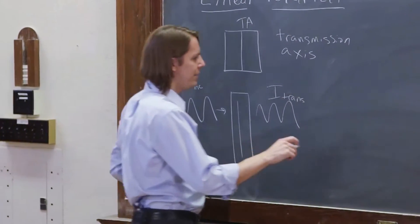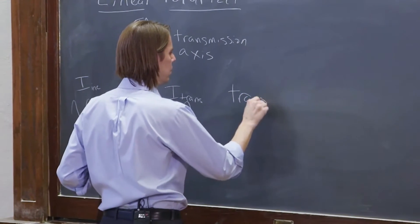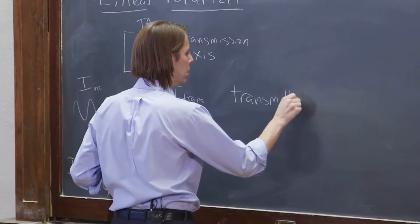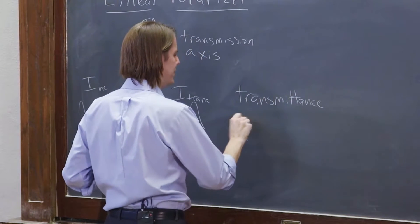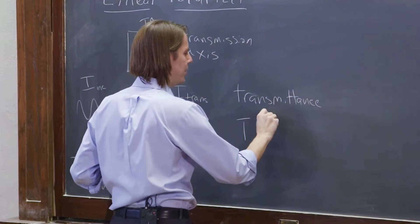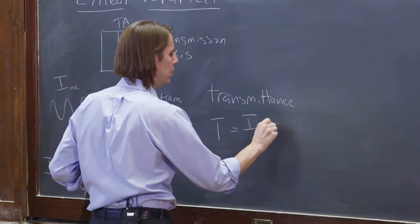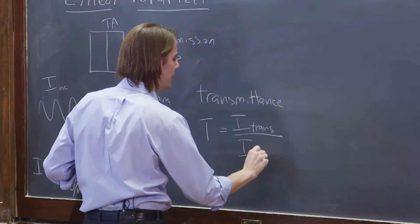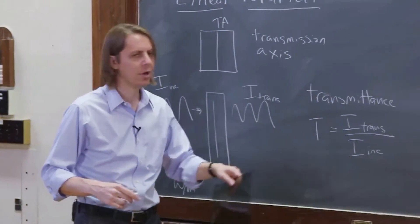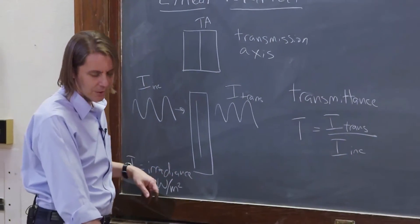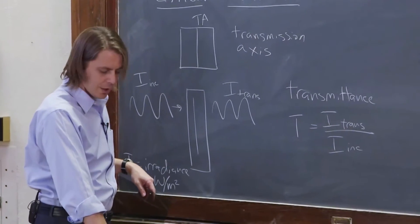Well then you have a quantity called the transmittance. The transmittance we call big T, and it's basically just how much irradiance gets through divided by the irradiance that was incident, the transmittance. It's either given as a fraction or given sometimes as a percentage.